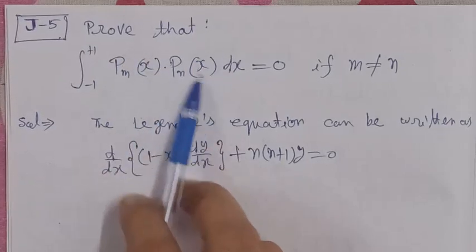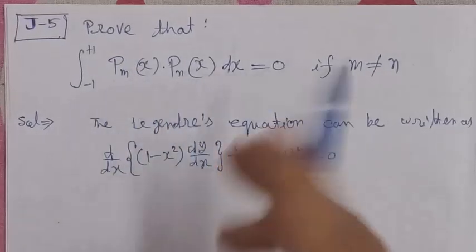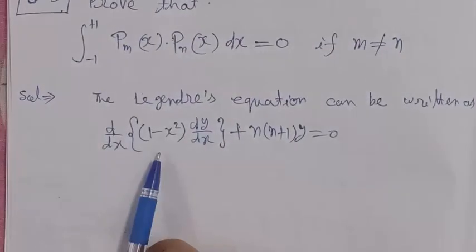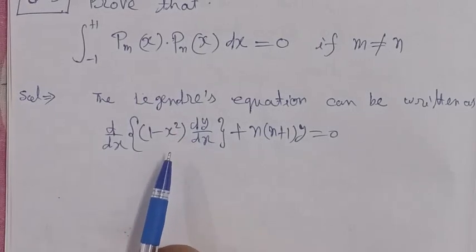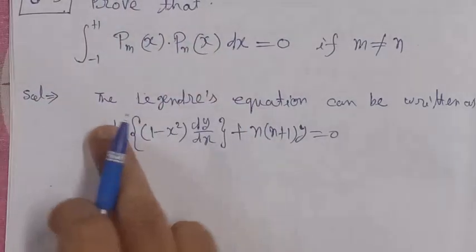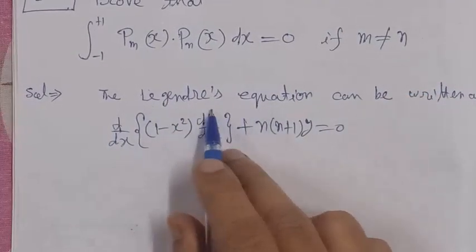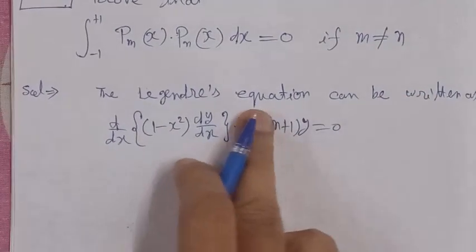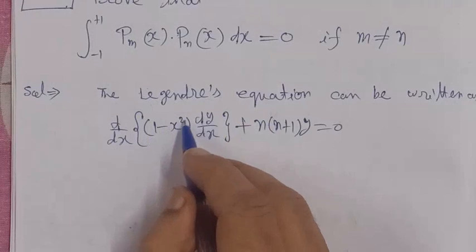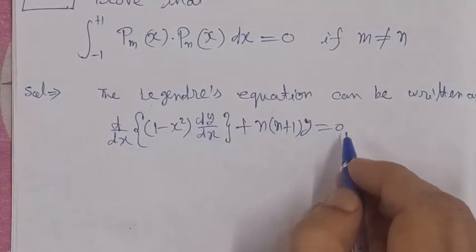Legendre polynomials are solutions of the Legendre equation. The Legendre equation can be written in the form: d/dx[(1 - x²) dy/dx] + n(n+1)y = 0.